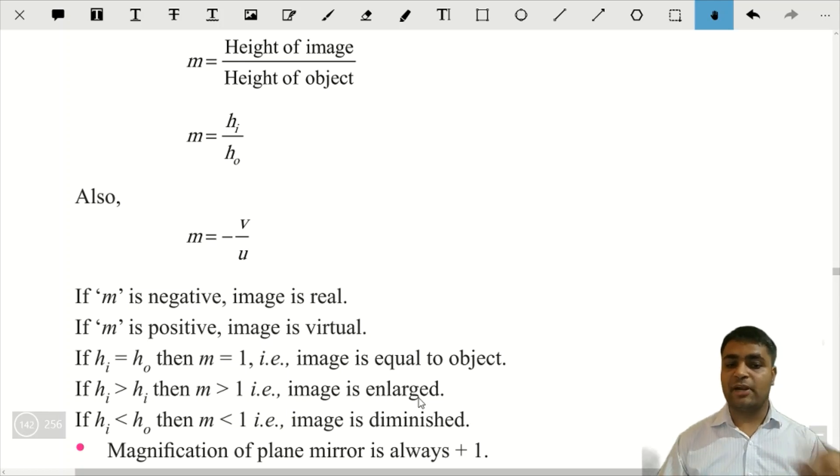If height of image is greater than height of object, image is enlarged. Size mein badi hogi. If height of image is less than the height of object, iska matlab m kya hogi? Less than one hogi. Toh image kya hogi? Diminished hogi. Chhoti hogi.